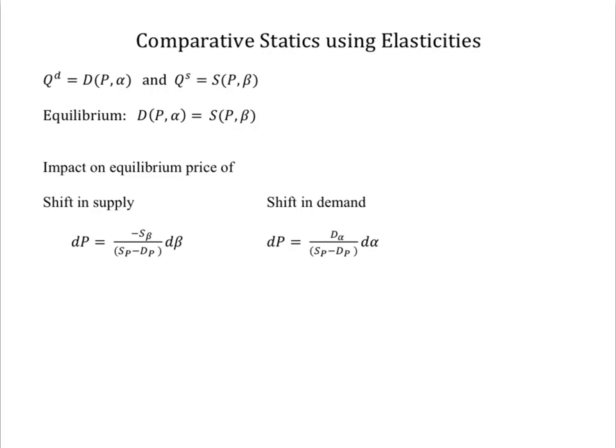We'll consider a generic demand shifter alpha, such as the price of a complement or substitute or average family income, and a generic supply shifter beta, such as input prices or measures of the impact of weather, technological innovation, or other exogenous forces.